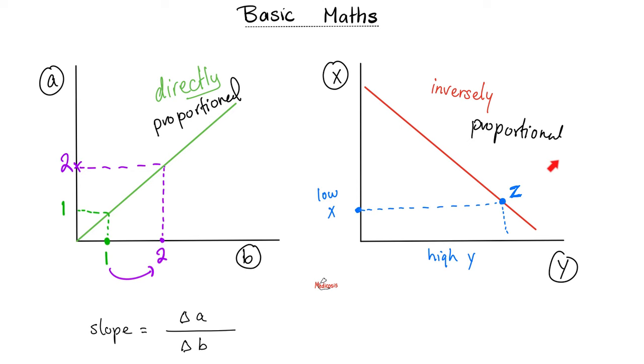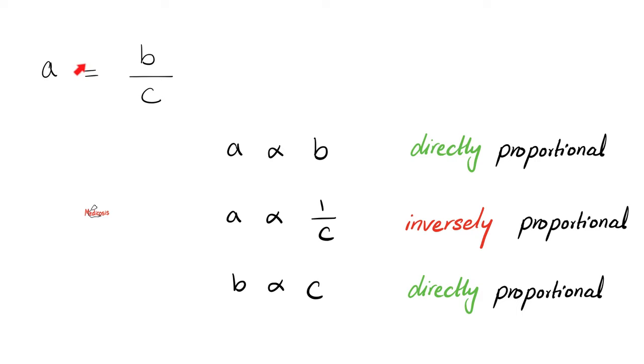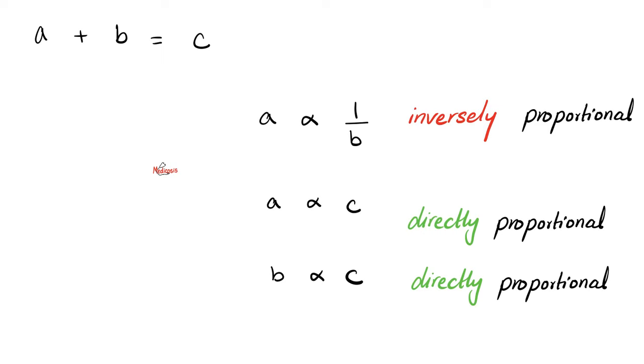Conversely, if you find the relationship between them, and the line is going downwards, like this, to the abyss, it is inverse relationship. Let's play with this equation. Between A and B, there is a direct relationship, as long as C is constant. Next, between A and C, there is inverse relationship, as long as B is constant. How about the relationship between B and C? Direct relationship, as long as A is constant.